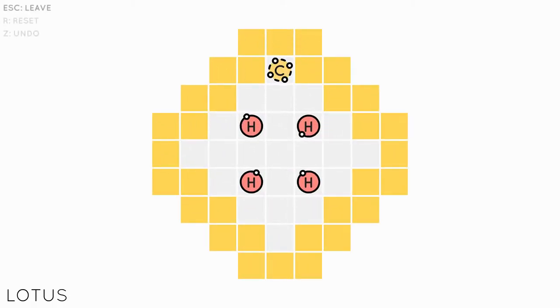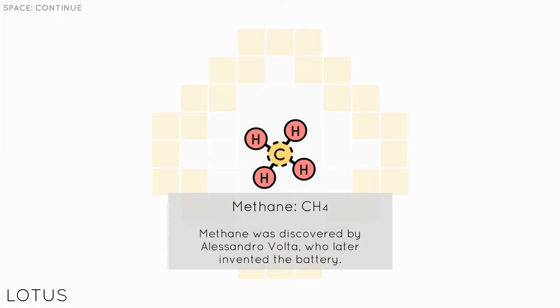This is called Lotus and I feel like going down the middle path is like a red herring so you're not supposed to do that. I think you're supposed to go to the right or to the left. Now let's just do it like this so we can actually grab both and then grab that. Alright I'm trying to get the hang of this. Methane CH4. Methane was discovered by Alessandro Volta who later invented the battery.